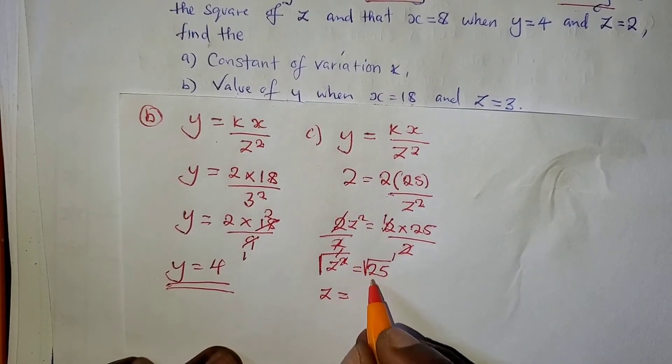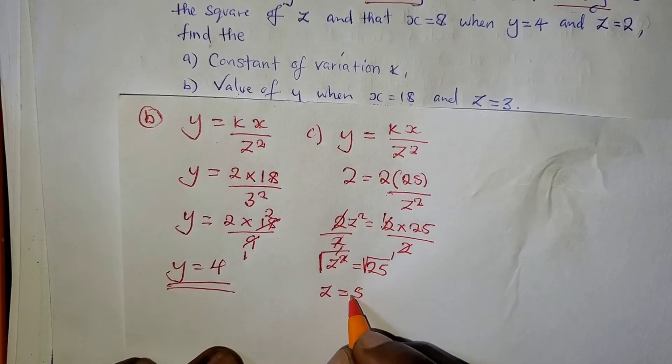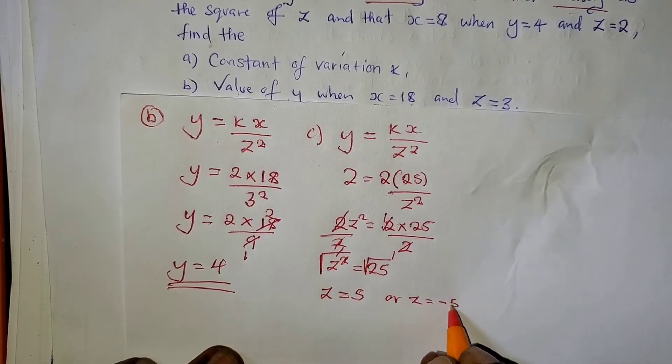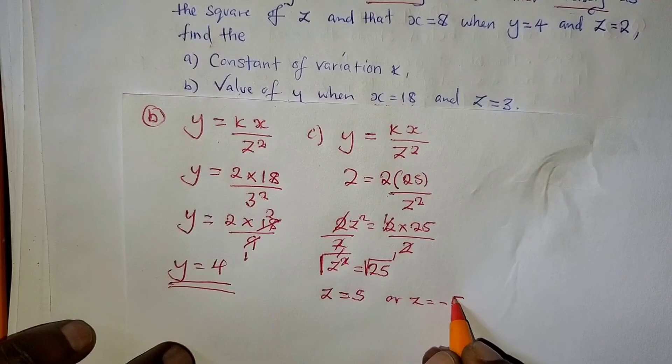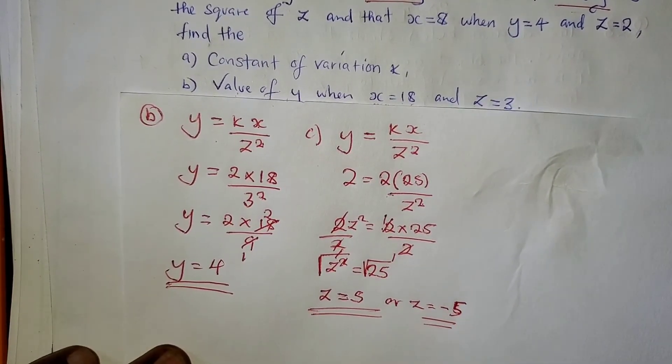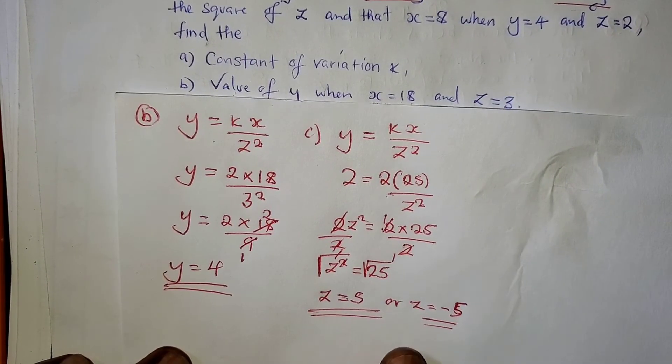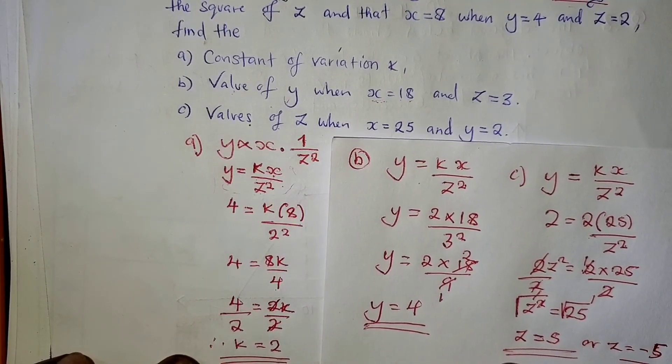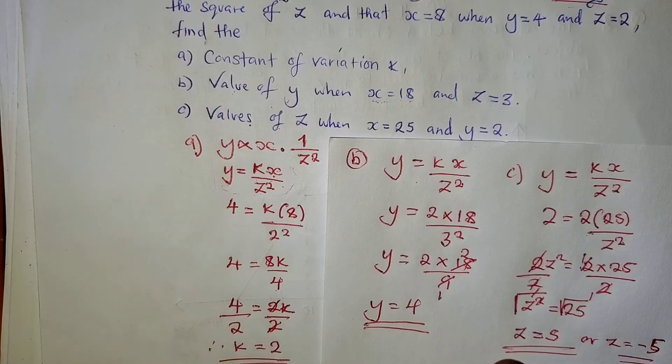So Z equals the square root of 25, which is 5 or negative 5. So you have 2 answers, positive 5 or negative 5. So this is the answer or the solutions to this question and the variation.